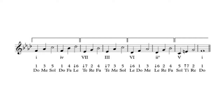So the entire thing in its most basic form sounds like: one, three, five — one, four, six. Sev, two, four — sev, three, five. Six, one, three — six, two, four. Five, sev, two — one.